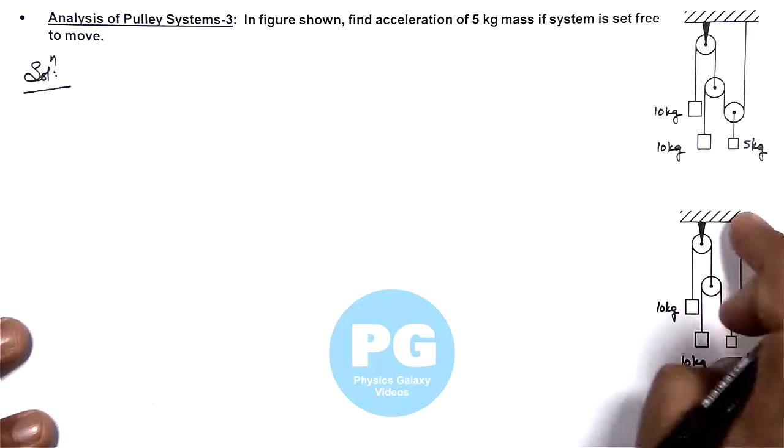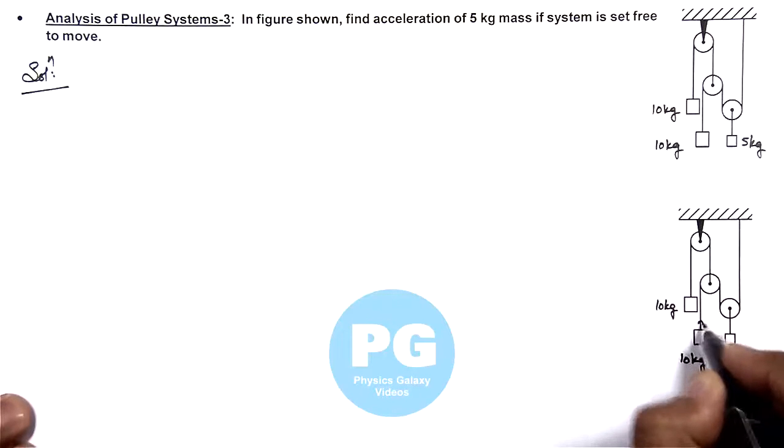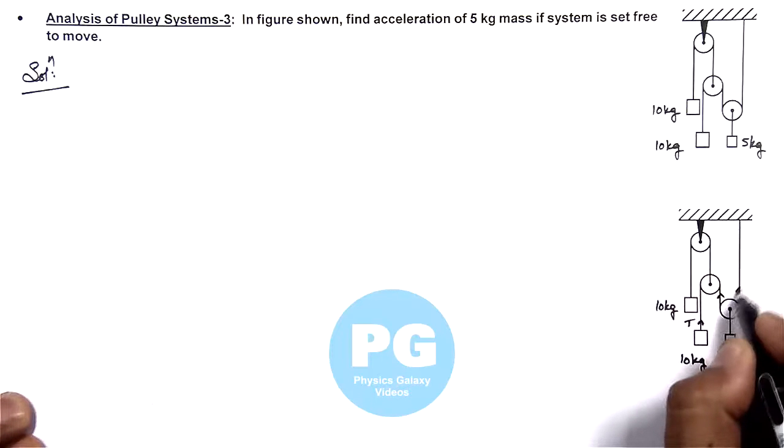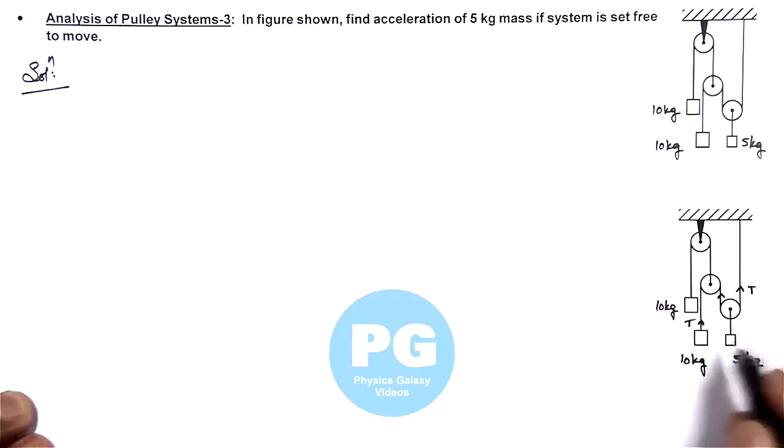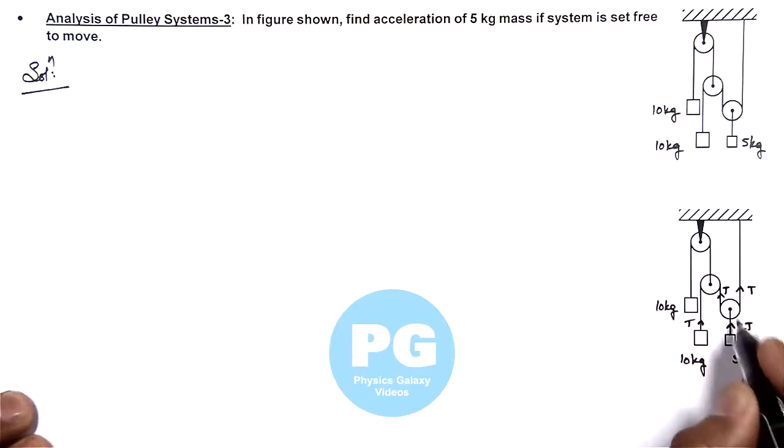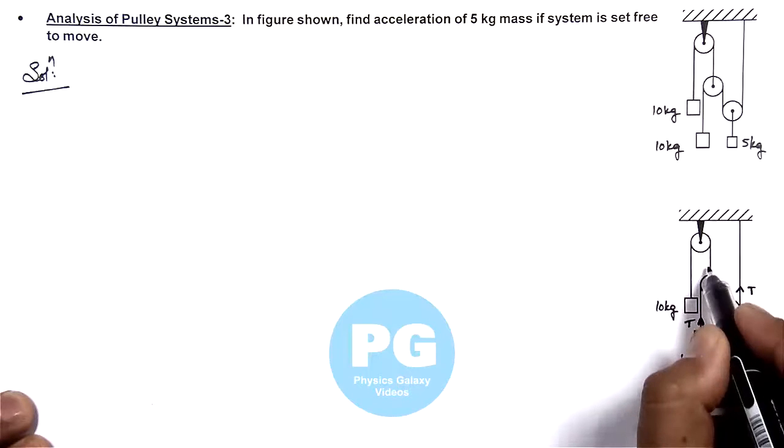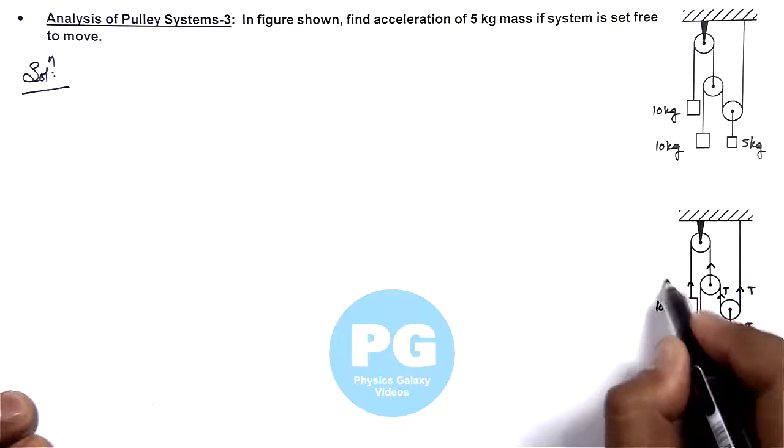This is the longest string available. Say if we consider tension in this string as t, then throughout the string tension will remain t as we are assuming ideal pulley and strings. So here tension will be 2t as we have discussed for massless pulleys, net force is equal to zero. Here also if the tension is t in this string, tension will be 2t.